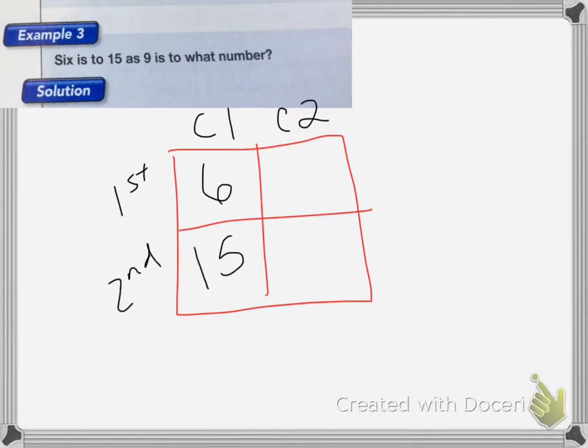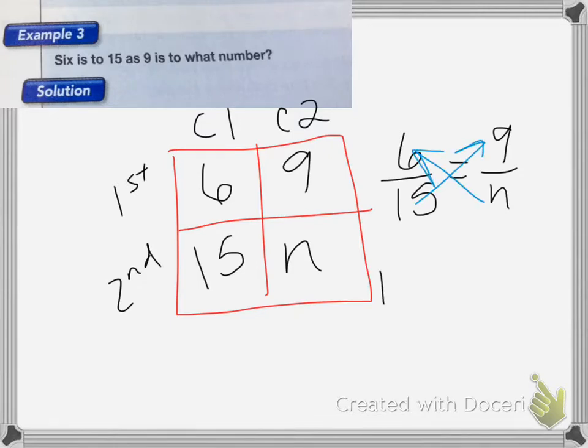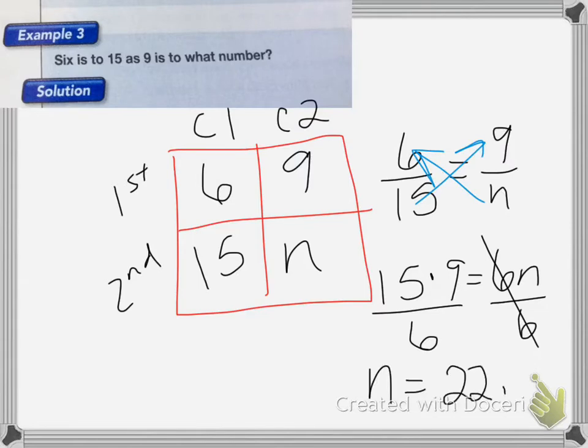To create my proportion: 6 over 15 equals 9 over N. Cross multiply to get 15 times 9 equals 6N. Divide both sides by 6. The 6s cancel, and N equals 22.5.